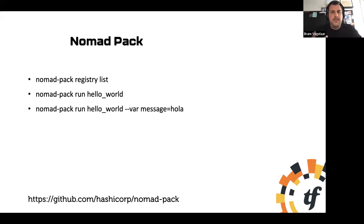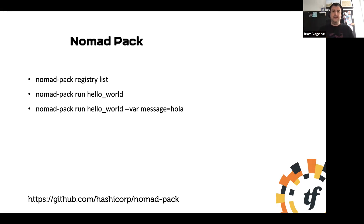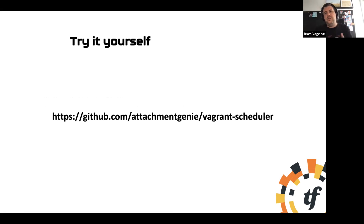To run something with Nomad Pack it's 'nomad pack run' and then the name of the pack. There's a simple way of injecting variables. Nomad packs can inherit other packs, so you can nicely create a pack for your database, a pack for your web server, and then combine them in a meta-pack where you inject variables. If you want to try Nomad yourself, I have a Vagrant setup with a Puppet master as my config management tool of choice, a Nomad setup, and a Traefik proxy in front. It comes with a couple of jobs, full Consul integration, and some Vault setup.